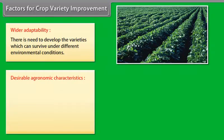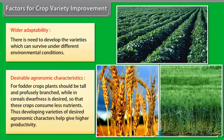Desirable Agronomic Characteristics. For fodder crops, plants should be tall and profusely branched, while in cereals, dwarfness is desired so that these crops consume less nutrients. Thus, developing varieties with desired agronomic characters helps give higher productivity.